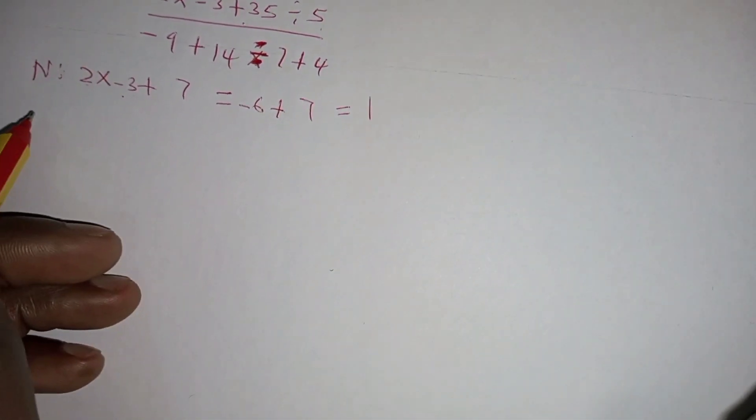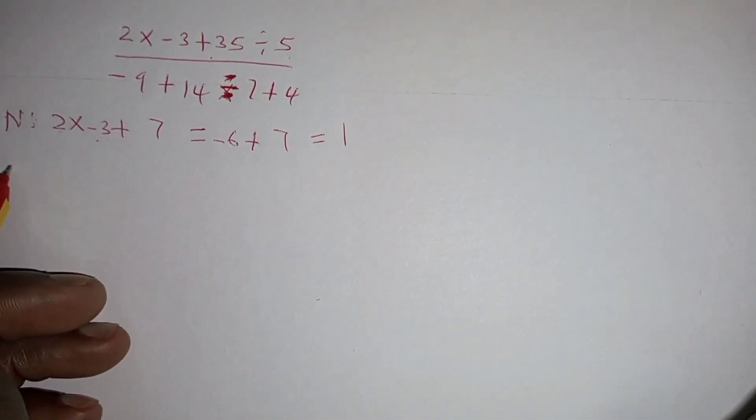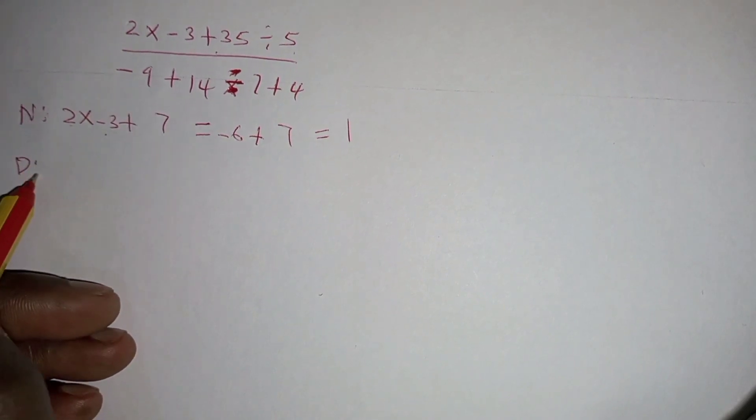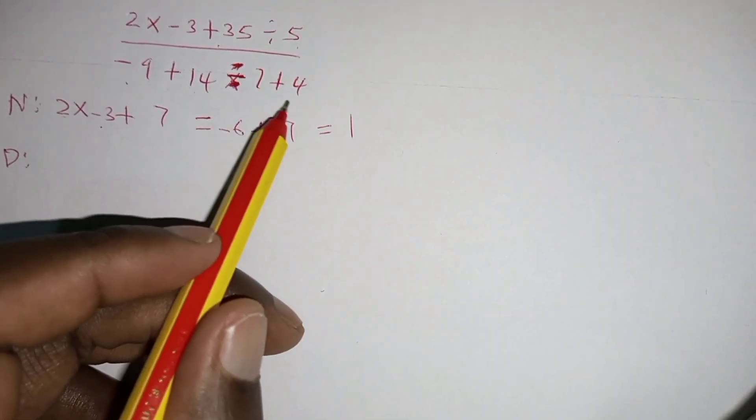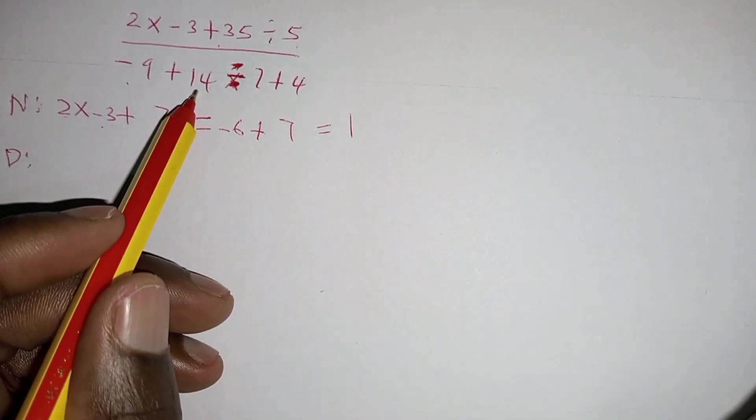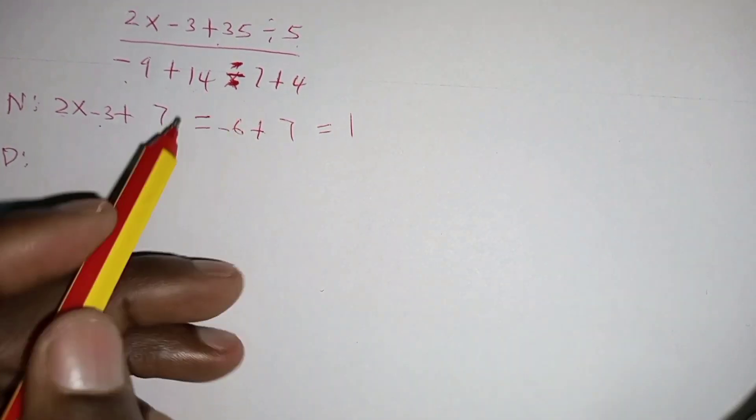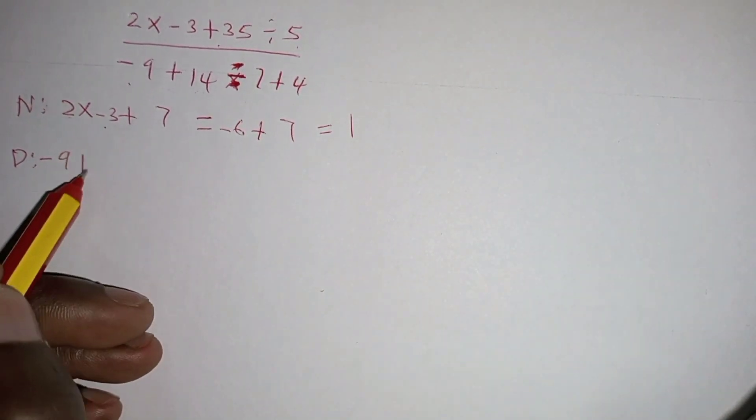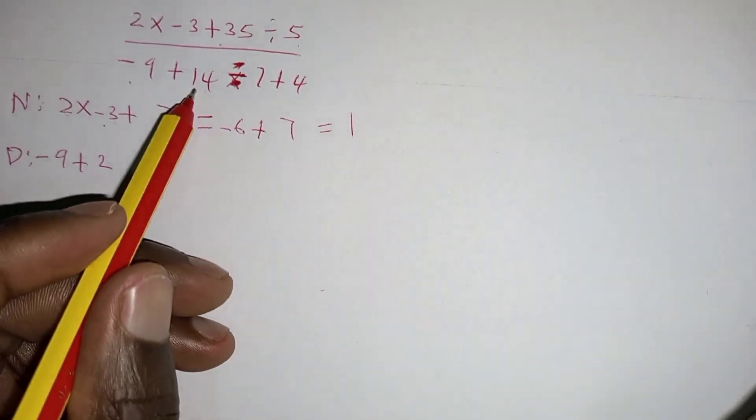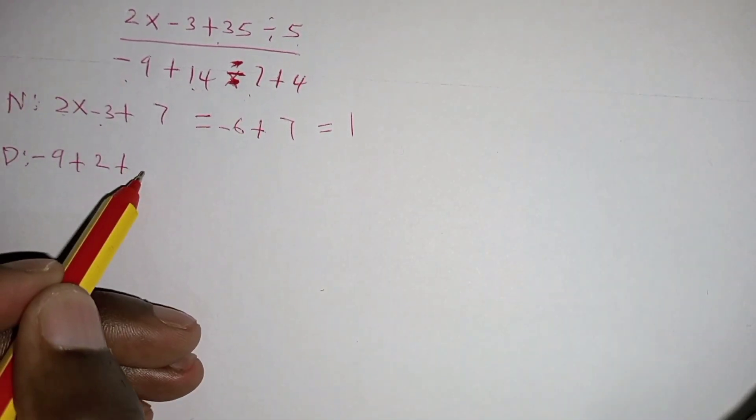Then we go to the denominator. We have negative 9 plus 14 divided by 7 plus 4. So by BODMAS, we begin with division. 14 divided by 7 will be 2. So you have negative 9 plus 2 plus 4.